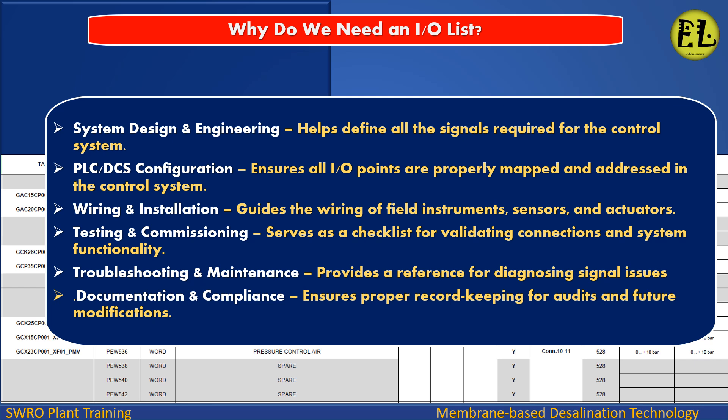Why do we need an IO List? System Design and Engineering: it helps define all the signals required for the control system. PLC/DCS Configuration: it ensures all IO points are properly mapped and addressed in the control system. Wiring and Installation: it guides the wiring of field instruments, sensors and actuators. Testing and Commissioning: it serves as a checklist for validating connections and system functionality.